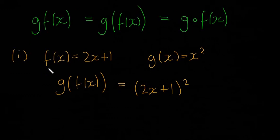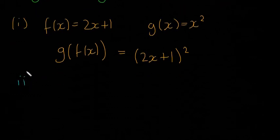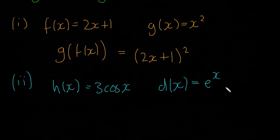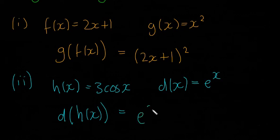I'll do the second example. The second example is h of x is going to be equal to 3 cos of x, and we're going to have d of x equal to e to the power of x, and they want d of h of x. So the d of x is the one on the outside, so you look for wherever there was an x, so here there's e to the x, and then you sub in the other function into there. So basically our answer is going to be e to the power of 3 cos x.